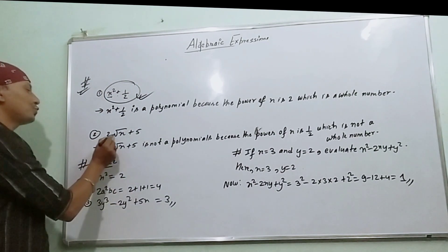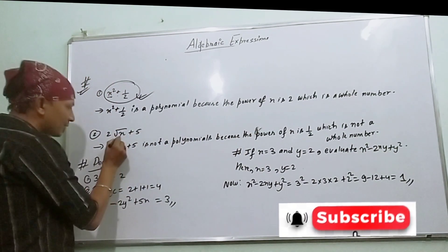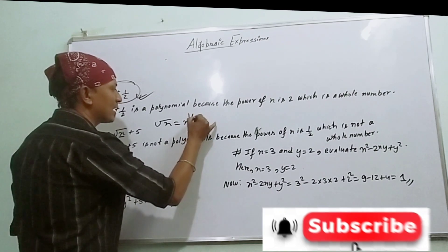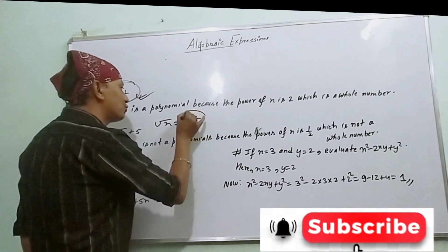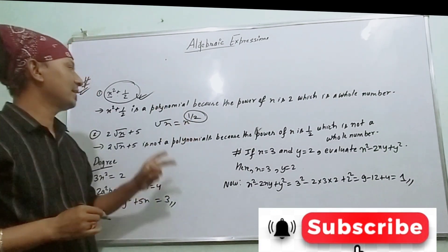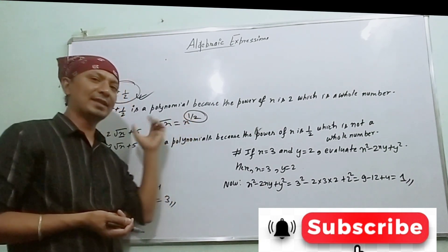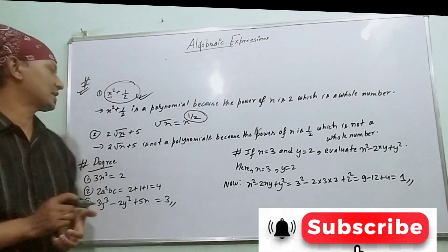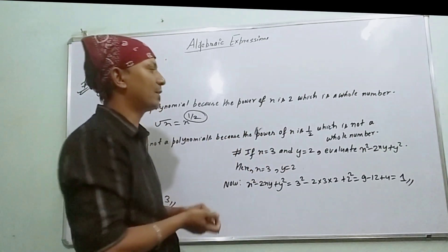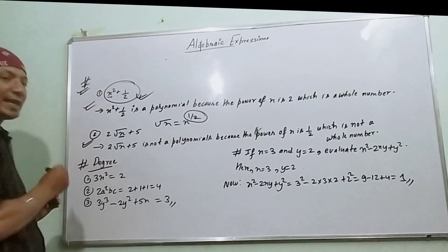However, 2√x + 5 is not a polynomial because the power of x is not a whole number. √x means x to the power 1/2, which is a fraction. Since the power of x is a fraction, 2√x + 5 is not a polynomial.